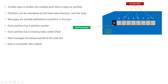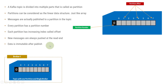This data structure forms the core of your Kafka ecosystem. Inside a topic, it is divided into multiple parts called partitions. Every partition has a partition number and an increasing sequence of index called partition offset. For example, if there is a broker with a topic with one partition, you will get one array-like data structure where the partition number is zero and the offset starts from 0, 1, 2, 3 and is ever increasing.